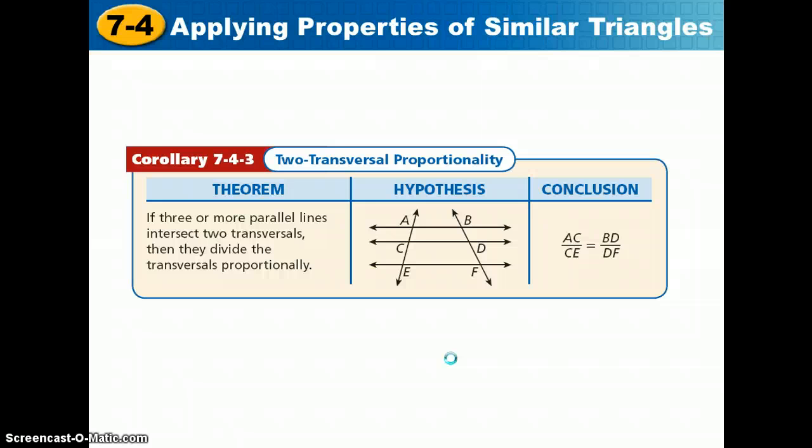Next, we also have the two-transversal proportionality corollary, 743. In this corollary, we're given three or more parallel lines, three or more, we could have many here, intersected by two transversals, these two lines that are not parallel. This divides the transversals proportionally. I could say AC over CE equals BD over DF.